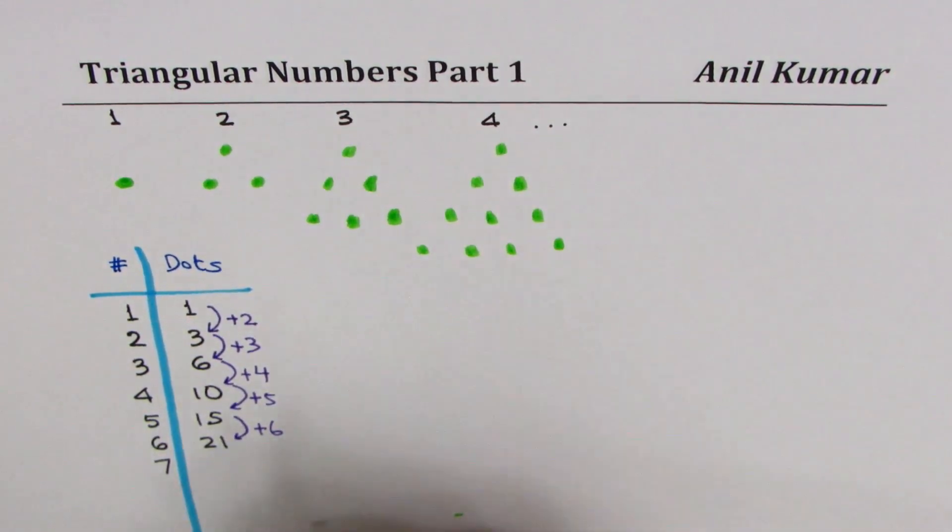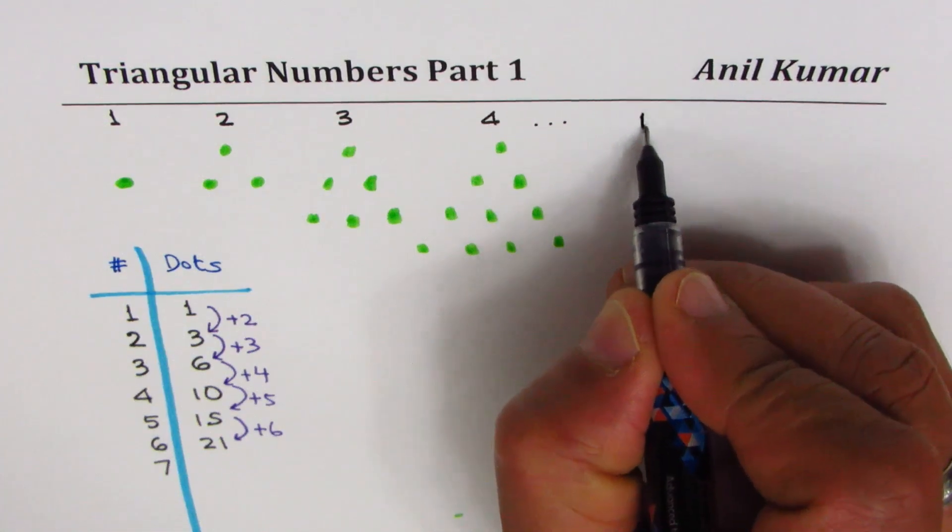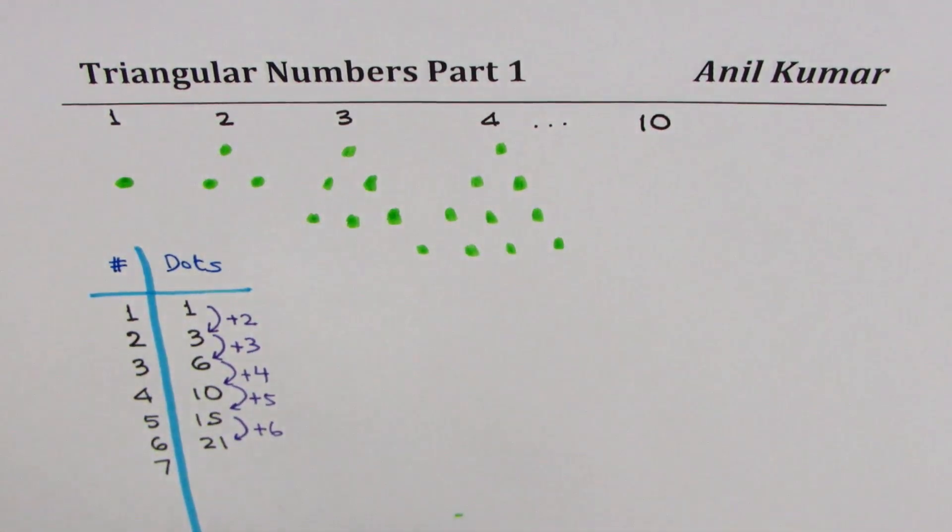Now as an exercise, can you tell me how many dots will be there in the tenth pattern without actually making them? So as you can see, we are adding one more each time. So one way is we can count as going up.